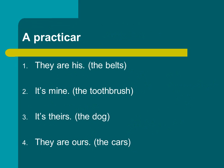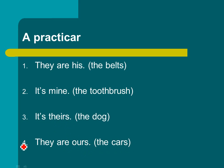It's that simple. Give it a try. 'They are his' — we're talking about the belts. 'It's mine' — we're talking about the toothbrush, because you don't want to share a toothbrush. 'It's theirs' — the dog, because multiple people usually own a dog. And 'they are ours' — the cars. Pause the video and try it on your own. Look at the vocab and the previous slide if you need help remembering the possessive pronouns.